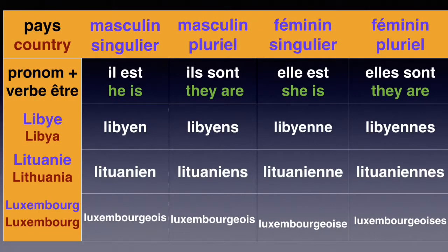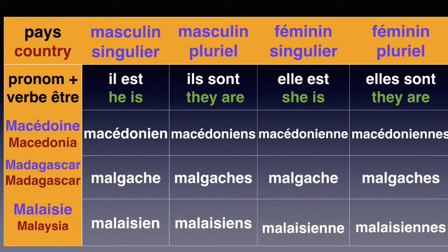Il est libyen, he is Libyan. Elle est libyenne, double N, E to show it's feminine. Il est lituanien, he is Lithuanian. Elle est lituanienne, double N, E. Il est luxembourgeois, he is Luxemburger. Elle est luxembourgeoise, we add an E to make it feminine. Il est macédonien, he is Macedonian. Elle est macédonienne, double N, E. Il est malgache, he is Malagasy. Elle est malgache — both are the same. Il est malaisien, he is Malaysian. Elle est malaisienne, double N, E to show it's feminine. And we add an S for plural.